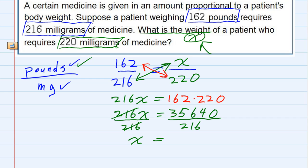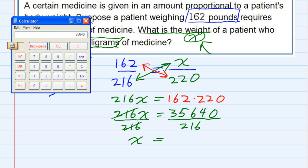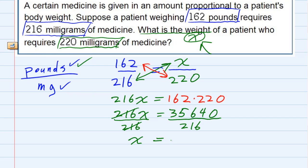On the right-hand side, I just need to take that number we already have in the calculator, 35640, and divide by 216, which gives me 165.